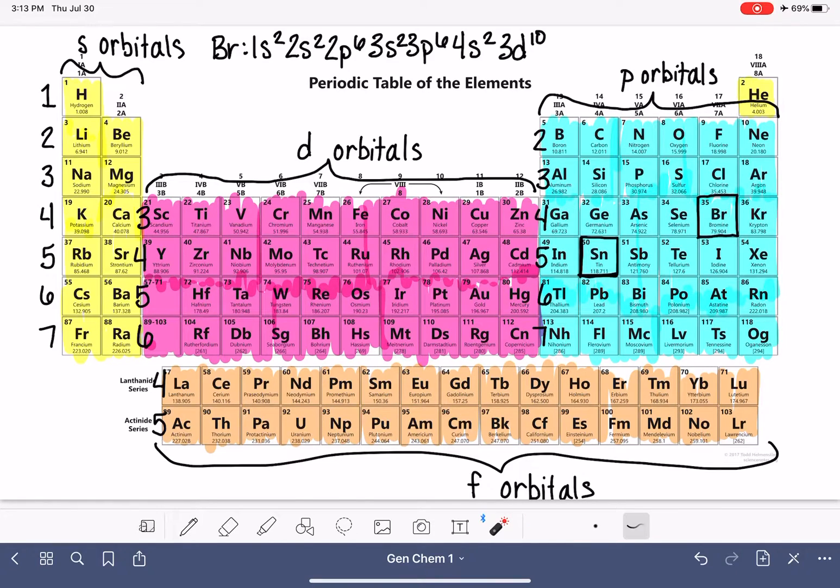And then last but not least 4p one, two, three, four, five, 4p⁵. That's the electron configuration for bromine. Can you imagine how tedious that would be if we had to actually do that by drawing an energy diagram or God forbid, assigning quantum numbers to all 35 of those atoms? That would have been so much work.